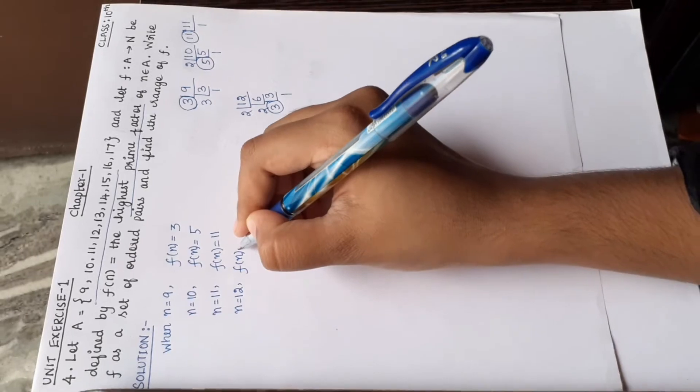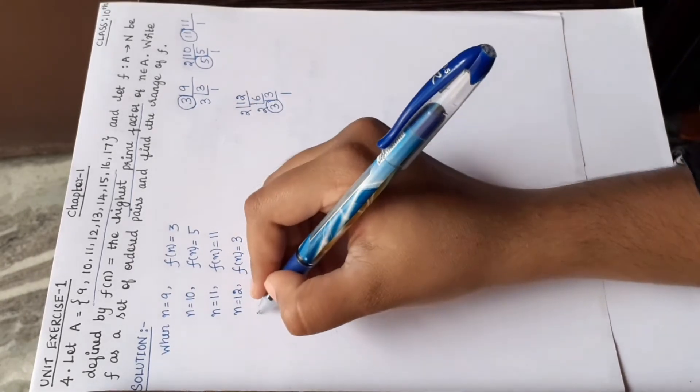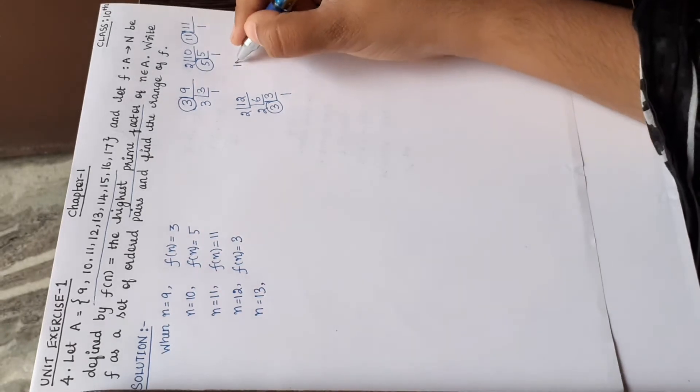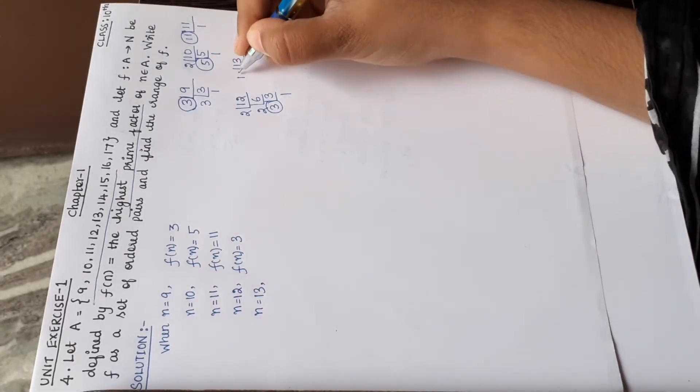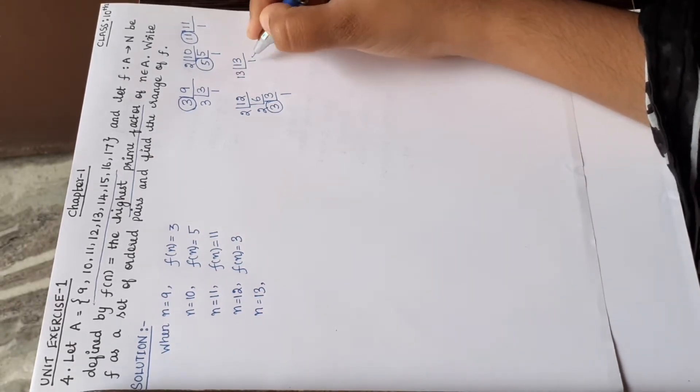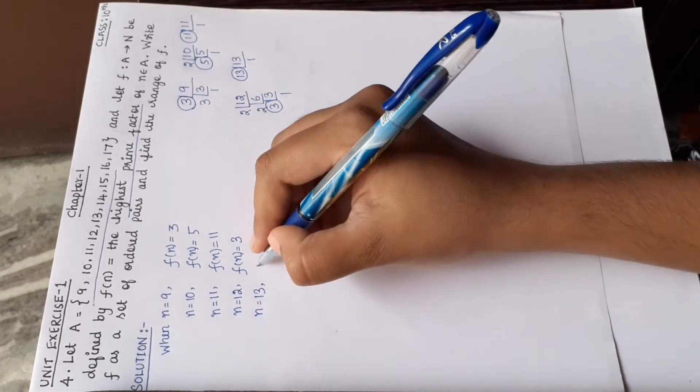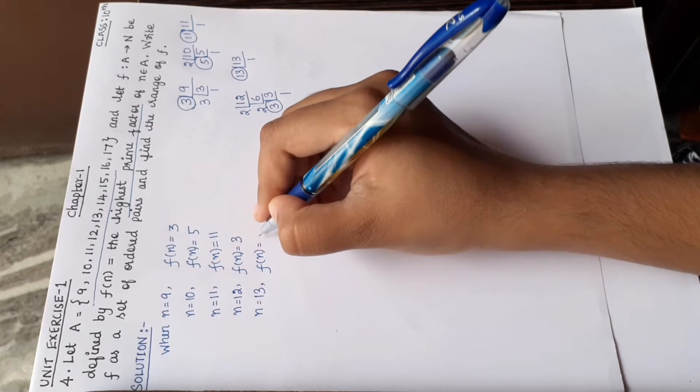F of n is equal to 13. Next, n is equal to 13. 13 is only divisible in 13 table: 13 times 1 equals 13. So the highest prime factor is 13. F of n is equal to 13.